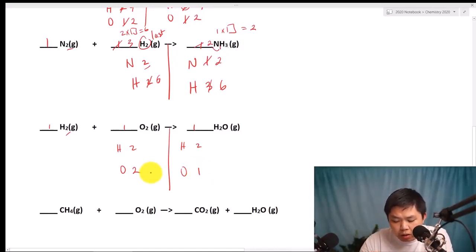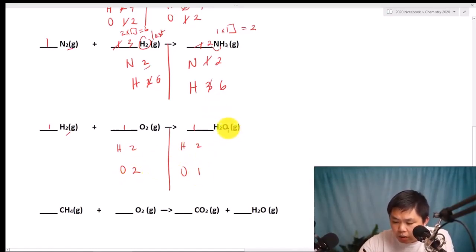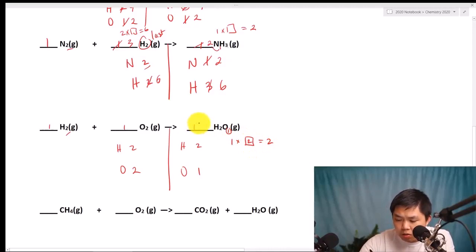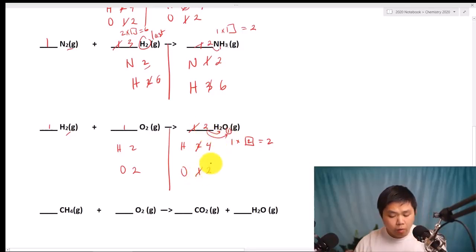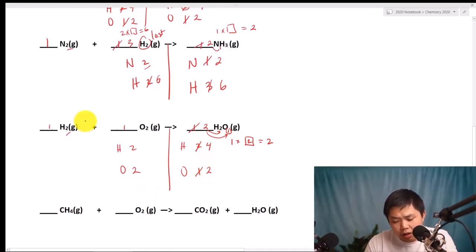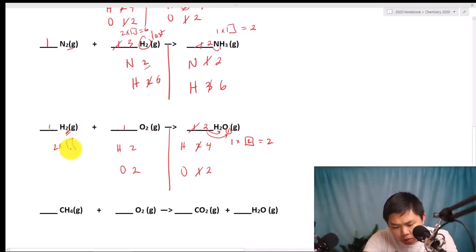The Hydrogen is already balanced, so we go to the Oxygen. We need two on this side as well — we have one, so one times what number gives us two? That's two. So this becomes two. But this affects the Hydrogen as well — now it's going to be four, and this becomes two. The whole thing changed, because now the Oxygen is balanced but the Hydrogen is not. So two times what number gives us four? Two times two. So two times two gives four. Now you have a balance.